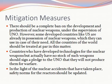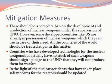Regarding mitigation measures, there should be a complete ban on the development and production of nuclear weapons under the supervision of the UNO. However, some developed countries like the US are already in possession of nuclear weapons. All countries of the world should be treated equally in this matter. Countries that have developed technologies for nuclear weapons but have no stock of such weapons should sign a pledge to the UNO that they will not produce them for warfare. In light of the nuclear accidents that have taken place, safety norms for reactors should be updated.